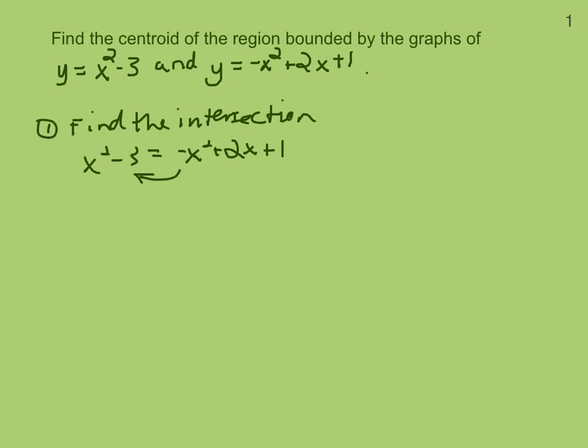And shifting all the terms that are on the left over to the right, what we get is 2x squared minus 2x minus 4 equals 0. So factor out the 2 to make the factoring work out a little more simple.